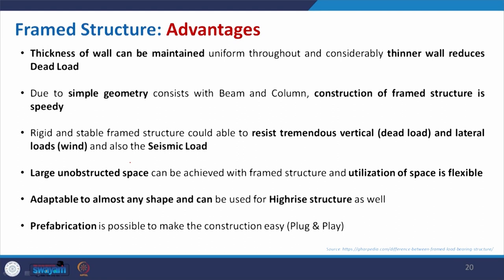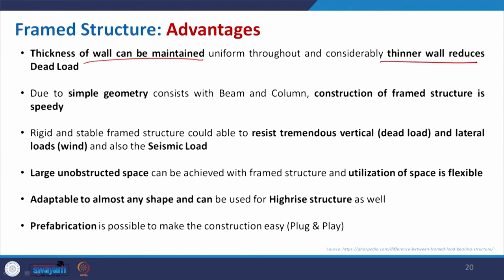First of all, compared to the load bearing structure, now the thickness of wall can be maintained uniformly throughout. The thickness of wall will not essentially matter for load distribution because the load will be taken care of by the beam, column and footing. The walls are just to make the partition, so they can be thinner compared to your load bearing structure. Whenever you make your wall thinner, there will be a reduction in the dead load — the self weight, the material self weight to the structure.